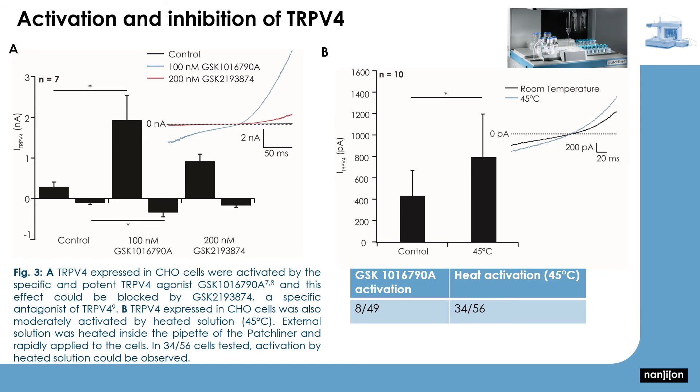TRPV4 could also be moderately activated by heated solution. To do these experiments, the solution was heated inside the pipette of the patch clamp robot to the required temperature, in this case 45°C, and then rapidly applied to the cell.